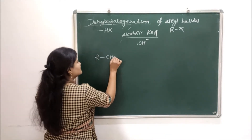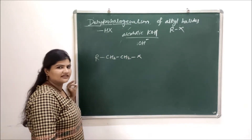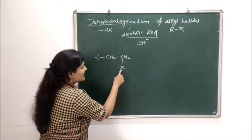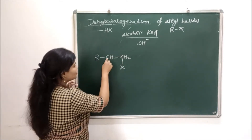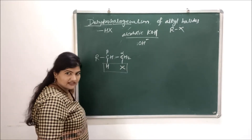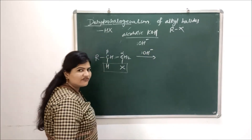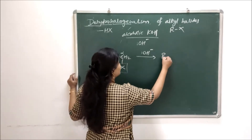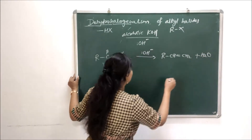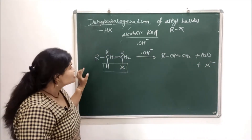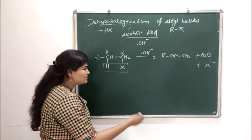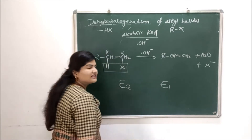For example, RCH₂CH₂X is your alkyl halide. The halogen is on the alpha carbon and one of the hydrogens is on the beta carbon. If you remove this HX from the adjacent carbons in presence of the nucleophile, you will get a double bond — RCH=CH₂. The hydrogen removed forms a water molecule with the nucleophile. This reaction can proceed by E2 mechanism or E1 mechanism, depending on the substrate.